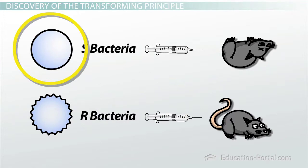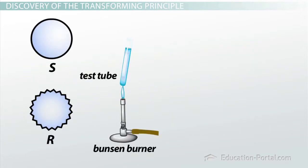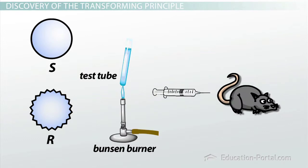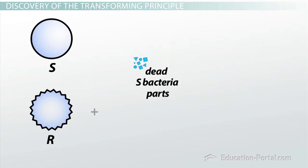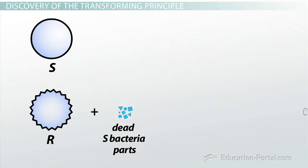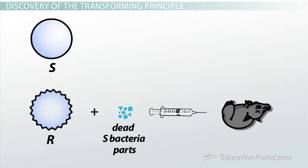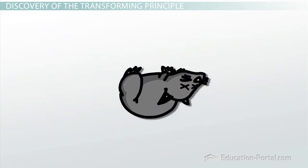Whereas the R-bacteria lacked a coating and was susceptible to the mouse's immune system. If Griffith heated the S- or R-bacteria, it killed the bacteria. Not surprisingly, a mouse injected with the dead bacterial parts did not die. Oddly though, if he mixed dead cell parts from S-bacteria with living R-bacteria and injected a mouse, the mouse died. But that's not all. When he examined the dead mouse more closely, he found S-bacteria, not R, inside the corpse.